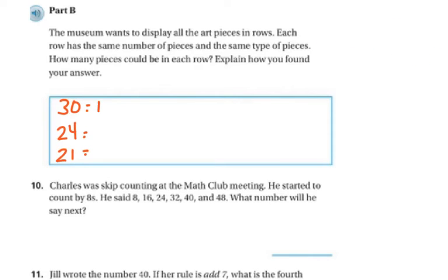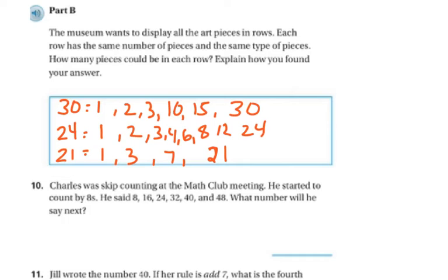This is where you're going to find all the factors and find the ones they have in common. We're going to list them out. 1 times 30, 2 times 15, 3 times 10, 1 and 24, 2 and 12, 3 and 8. Once you list them all out, you find what they have in common. So it's 1 and 3. The answer is 1 or 3.